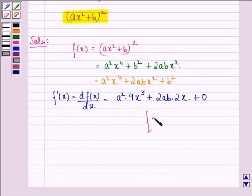This we get because the derivative with respect to x of xⁿ is equal to n times xⁿ⁻¹.